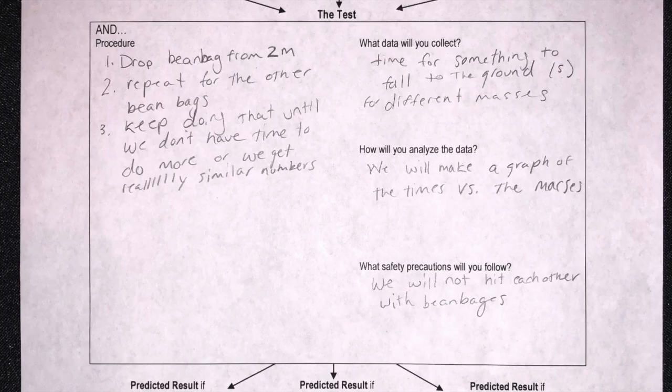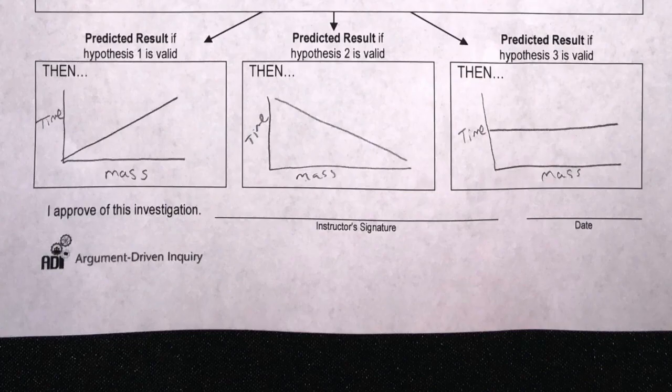When looking at students' procedures, it's definitely okay to let small errors go. The diversity in methods is an essential part of the ADI approach. So here a student has three basic procedures for dropping the bean bags, and they've thought about what data they will collect and how they will analyze that data. Here the student has made a predicted graph of what the data should or could look like if each hypothesis is found to be valid — definitely my favorite part of the investigation proposal, as we know how important it is for students to predict in science class.